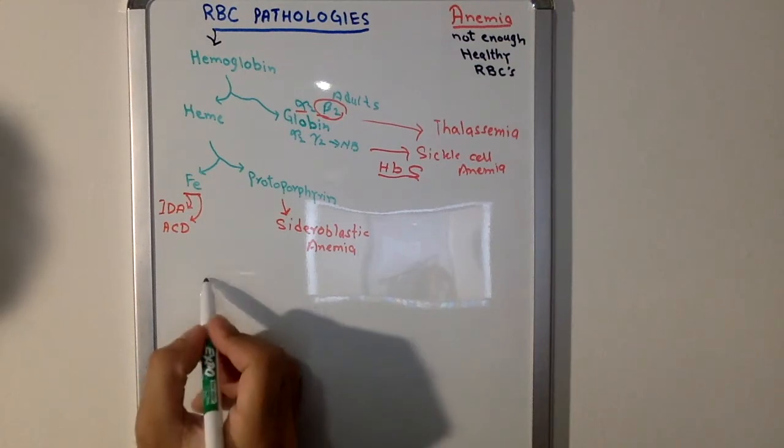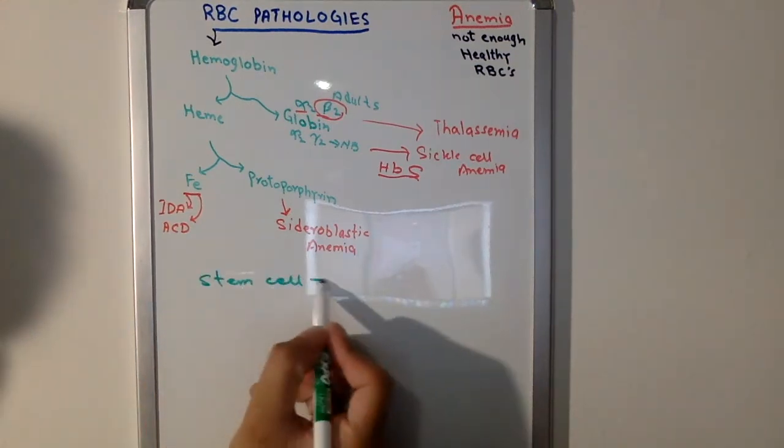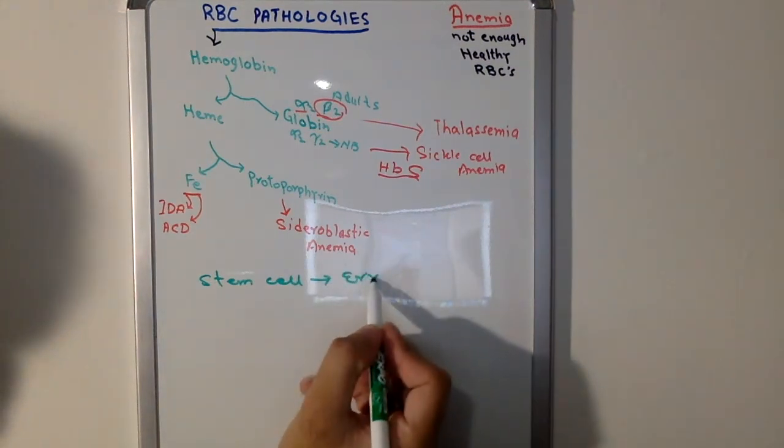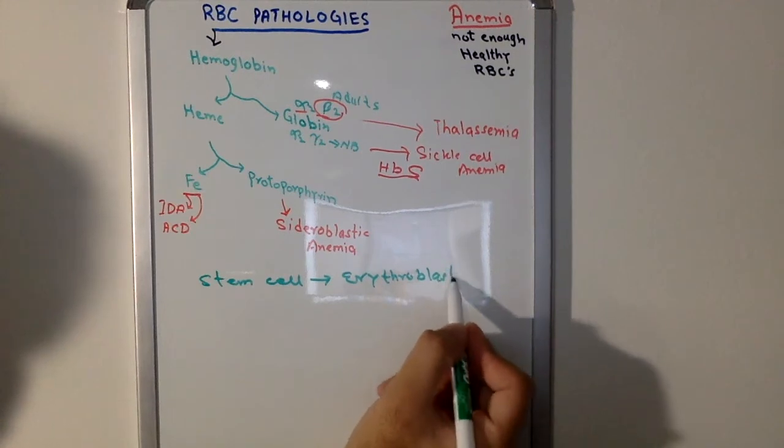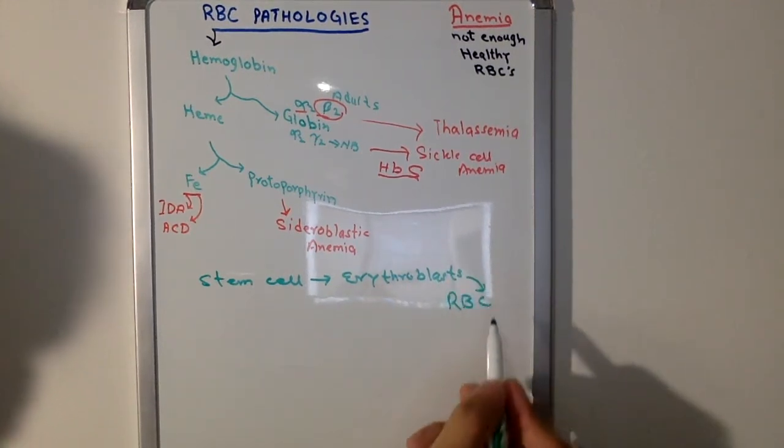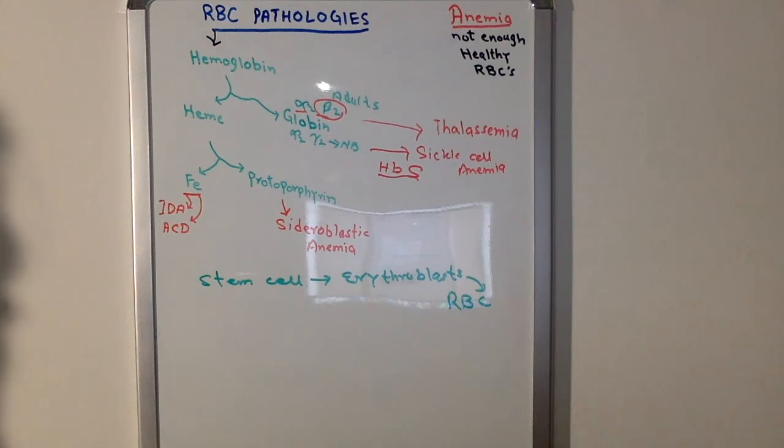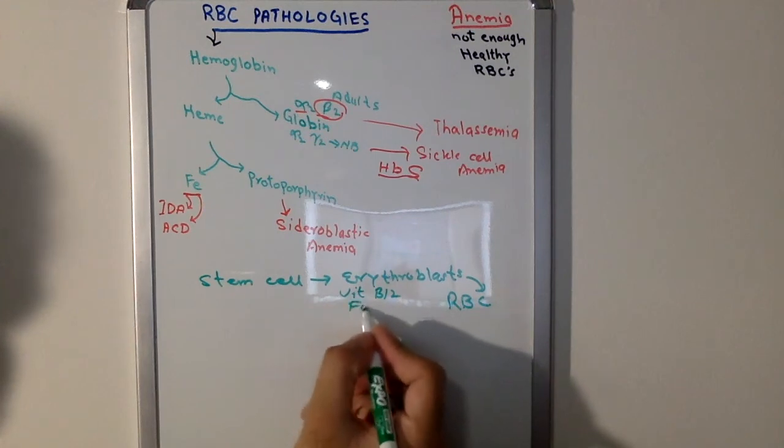When RBCs are coming from, here we have stem cells, and then we get erythroblasts, and from erythroblasts we eventually make red blood cells. For RBC synthesis, we need vitamin B12 and folic acid.